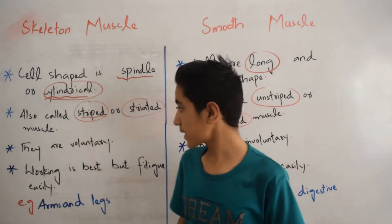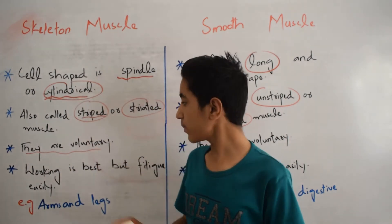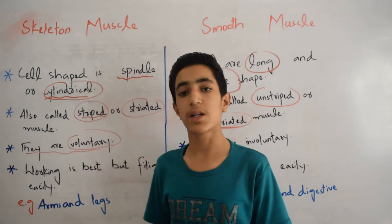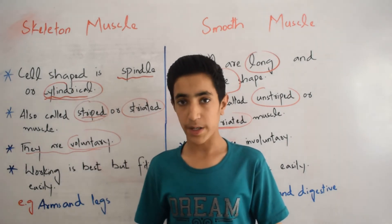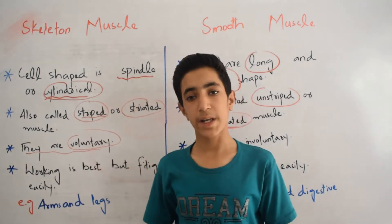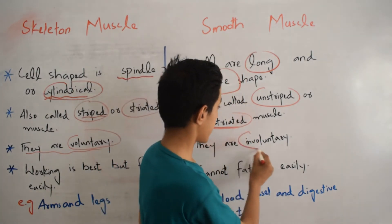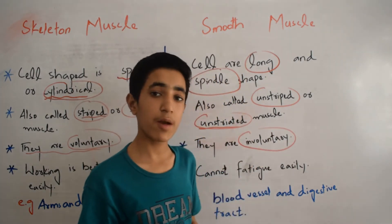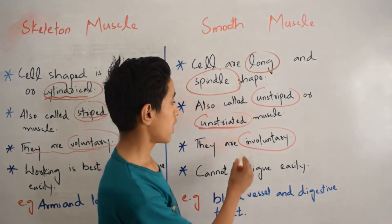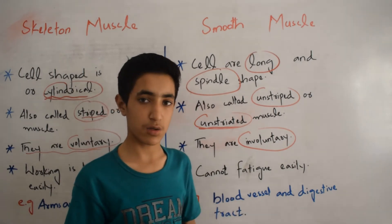The third difference is that skeletal muscles are voluntary. Voluntary means that it is under the control of our body. Skeletal muscle is voluntary while smooth muscle is involuntary. Involuntary means that it is not under the control of our body — basically, their contraction is not under our control.